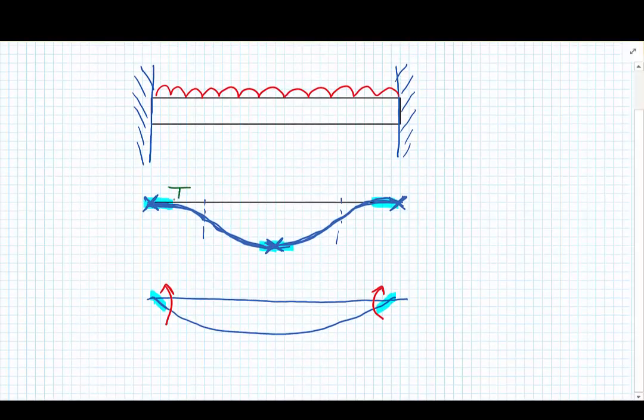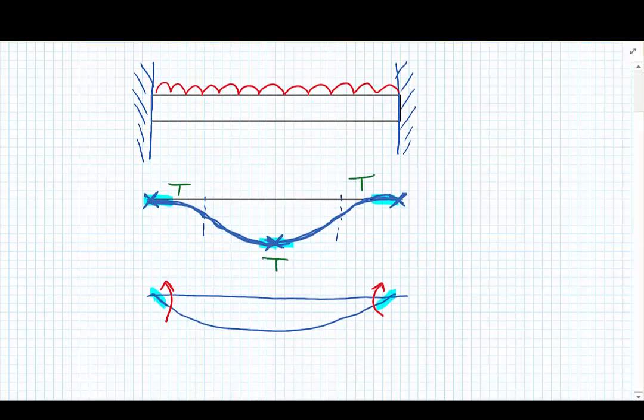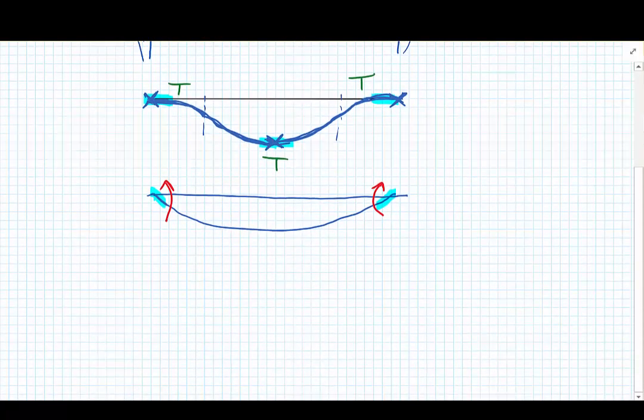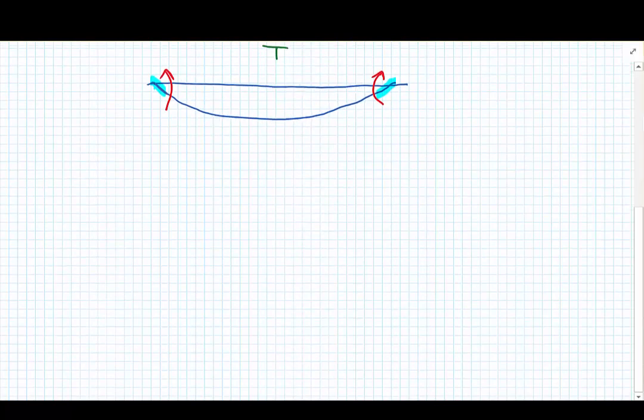I'm quickly just going to have a look at the deflected shape and note that we have tension on the top side here, tension on the top side here and tension on the bottom side here, and we're going to use these bits of information to draw the bending moment diagram.